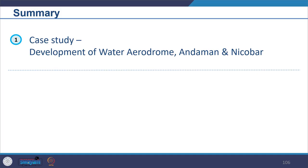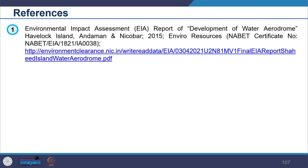That was Part 1 of this particular case study. We will look into all the details and I ask you to reflect on all the aspects covered. Keep thinking and keep discussing in the forum. We covered the scenario, what the project is like, and what kind of likely impacts might happen. We will continue with this in the next session. The key reference is the EIA report itself for the Development of Water Aerodrome in Andaman and Nicobar.